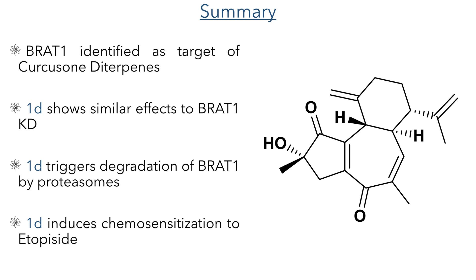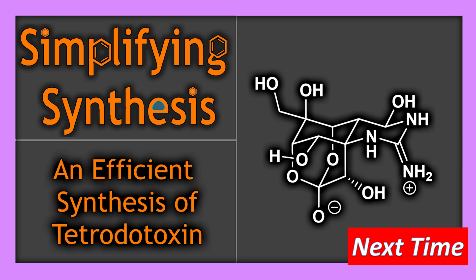In summary, the researchers were able to identify BRAT1 as the target of the curcuzone diterpenes. The most potent of these, compound 1D, shows similar effects to cells which do not express this protein, indicating a strong inhibition. They identified that binding of 1D to BRAT1 triggers its degradation by proteasomes, and this compound also induces chemosensitization to etoposide, suggesting it could be used in combination with this drug to provide more potent anti-cancer activity. That's everything for this week's Simplifying Synthesis — if you enjoy these videos please like, subscribe, and hit the notification bell. In the next video we will look at an efficient synthesis of tetrodotoxin.